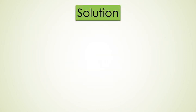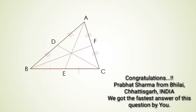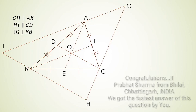So here is the solution. This triangle is given to us. Let's draw GI parallel to FB passing through A, IH parallel to CD passing through B, and GH parallel to AE passing through C.